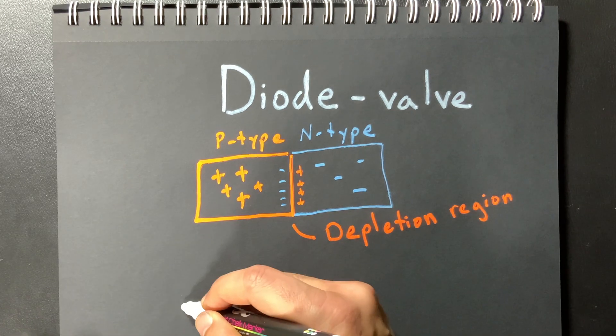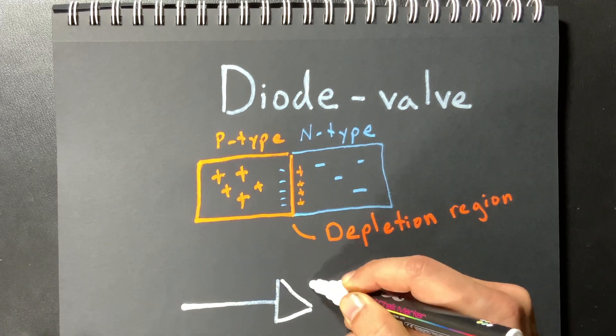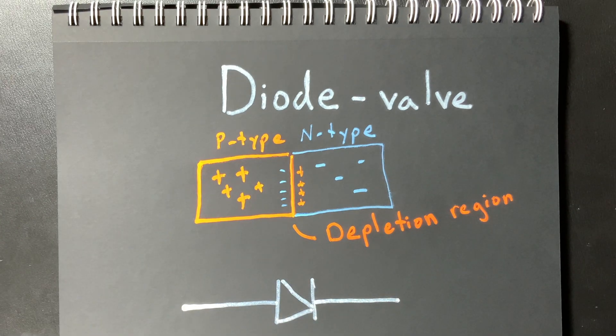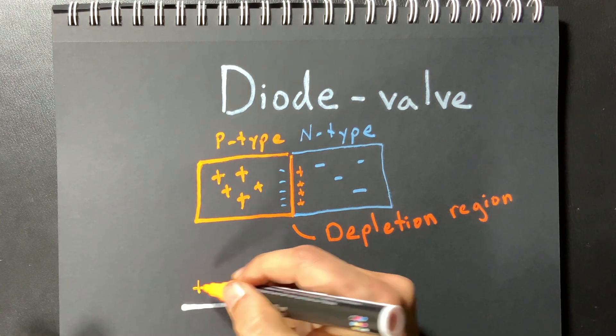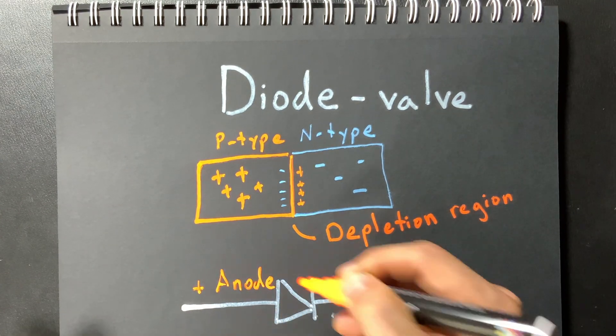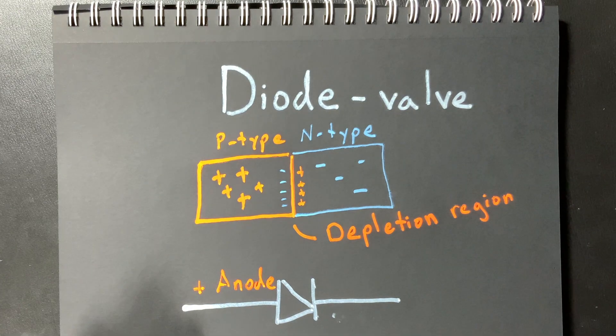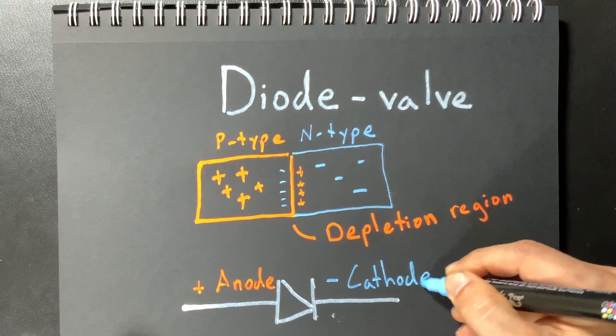I also know that the electrical schematic symbol for a diode looks something like this with one part being the anode that's the positive part and the negative end being the cathode.